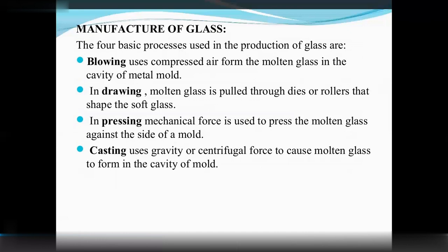Manufacturing of glass: glass is produced by four methods — blowing, drawing, pressing, and casting. In blowing, molten glass is shaped using compressed air to form a cavity. In drawing, dies are pulled into the molten glass and rolled into a soft glass shape. In pressing, mechanical force is used to press the molten glass into the proper shape. In casting, gravity or centrifugal force causes the molten glass to form a cavity of the desired shape.